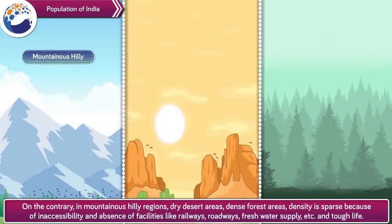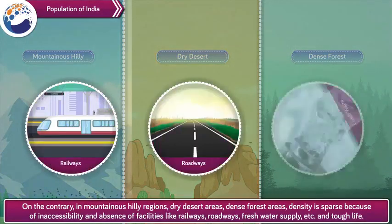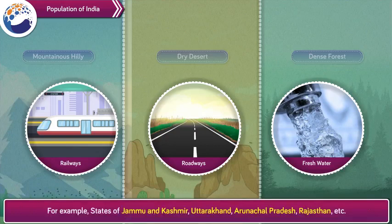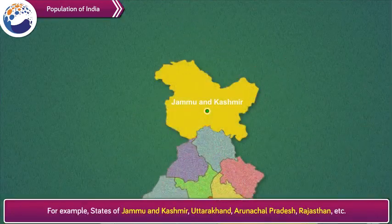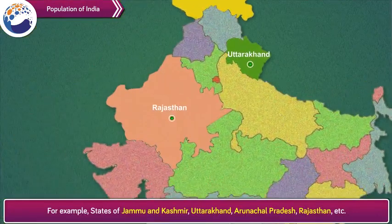On the contrary, in mountainous hilly regions, dry desert areas, and dense forest areas, density is sparse because of inaccessibility and absence of facilities like railways, roadways, fresh water supply etc. and tough life. For example, states of Jammu and Kashmir, Uttarakhand, Arunachal Pradesh, Rajasthan etc.